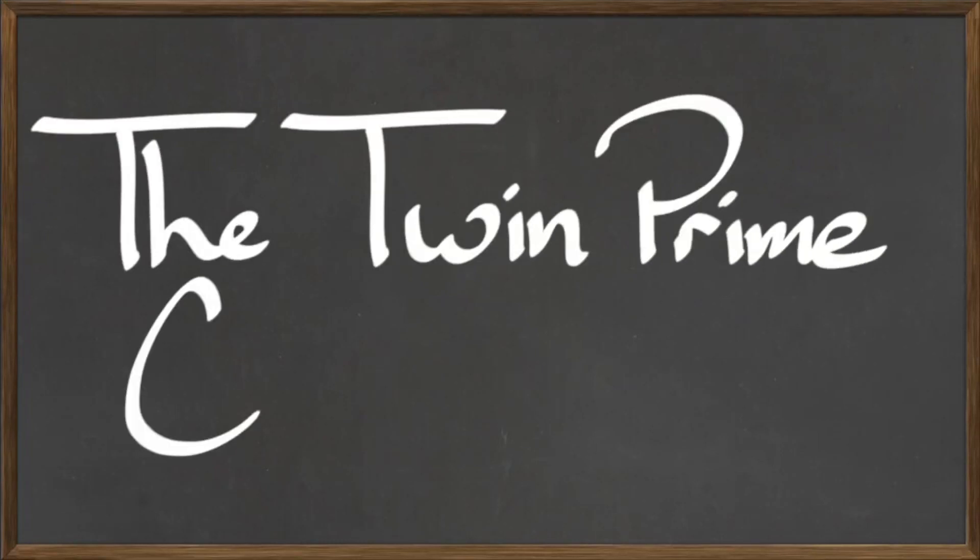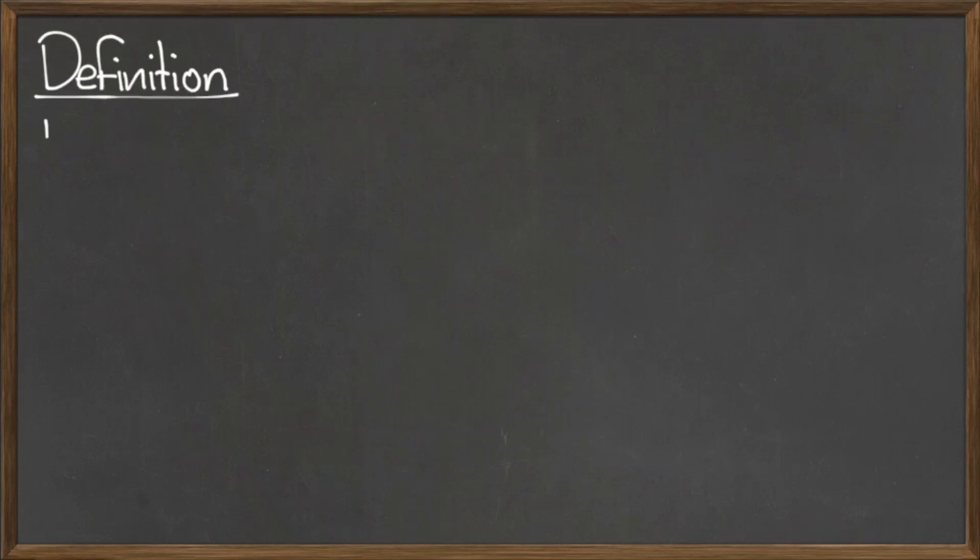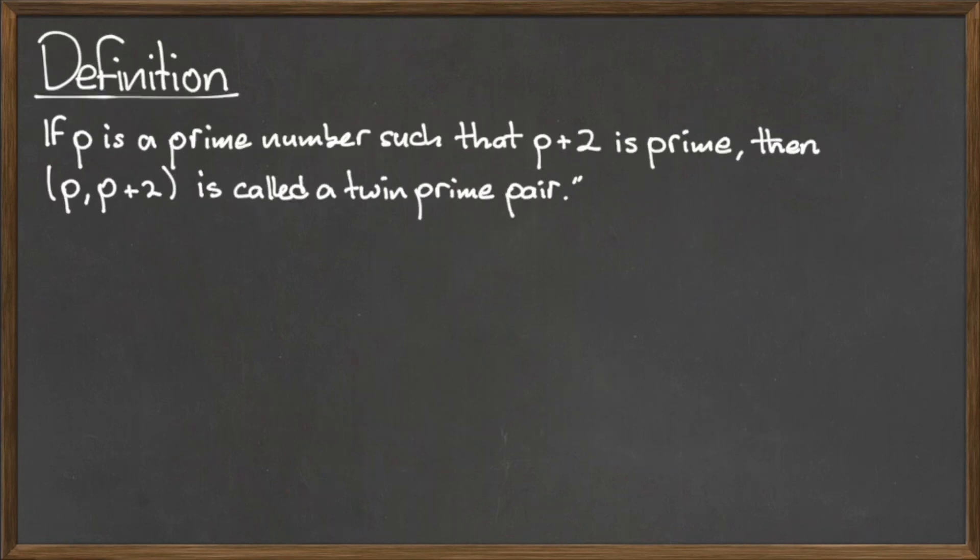In this video we will discuss the twin prime conjecture. If p is a prime number and p+2 is also prime, then the ordered pair (p, p+2) is called a twin prime pair. Some examples of twin prime pairs